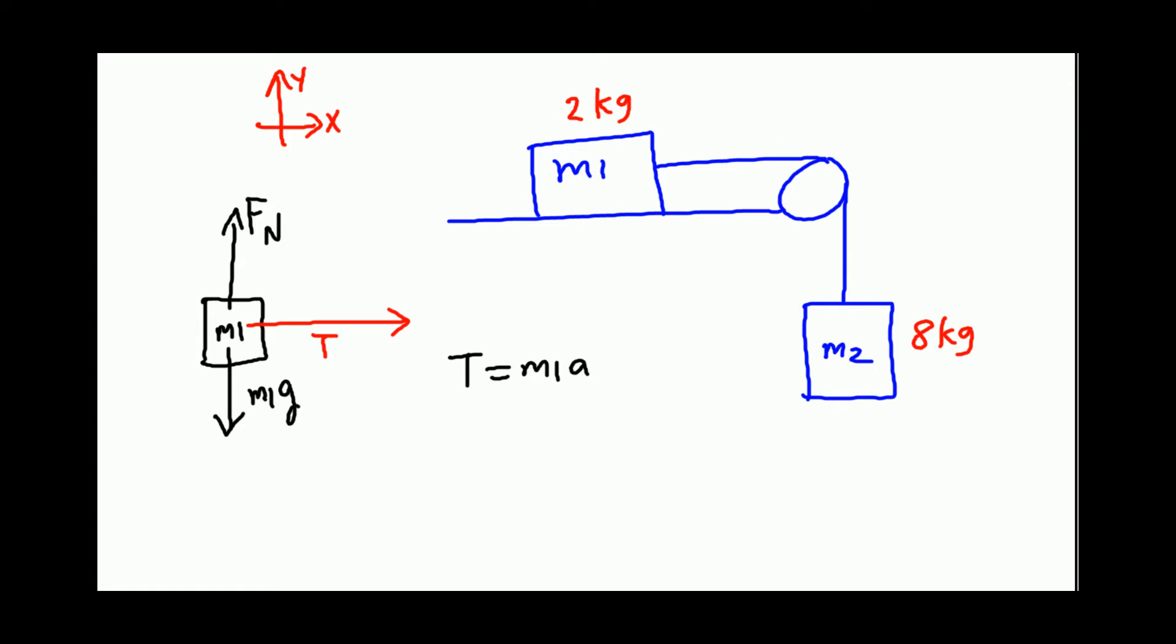For mass M2, we isolate mass M2. What do we see? We see gravitational force acting vertically down and we see tension acting vertically up. Which force is greater? Gravitational force, because it is accelerating down. So for mass M2, we see that M2g minus T equals M2a.